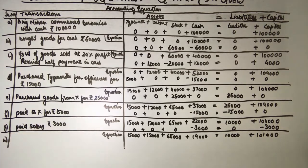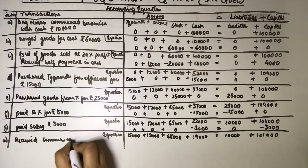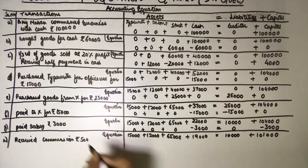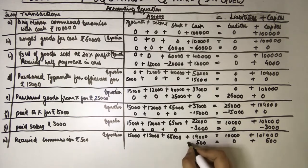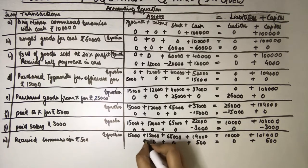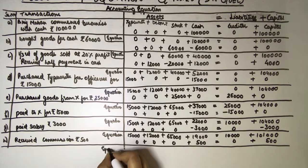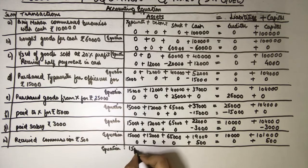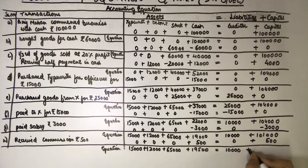Part H: received commission Rs. 500. Cash increases by 500 and it adds to profit, so capital also increases by 500. Rest remains the same. Equation: 15,000 plus 12,000 plus 65,000 plus 19,500 cash equals 10,000 creditors plus 1,01,500 capital.